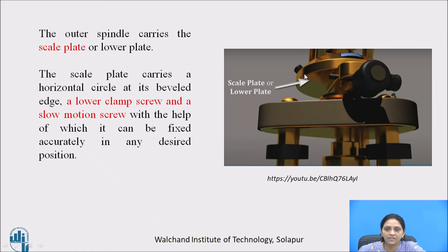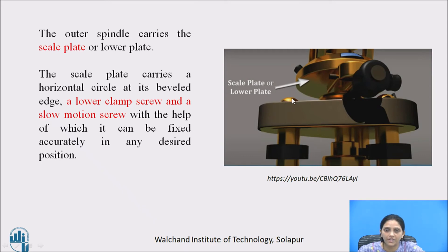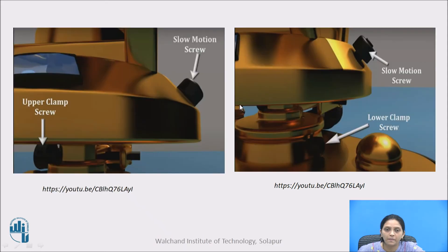The scale plate is also called the lower plate. The outer axis carries the scale plate or lower plate. The scale plate carries a horizontal circle at its bevel edge, a lower clamp screw, and a slow motion screw, with the help of which it can be fixed accurately in any desired position. The upper clamp screw and its slow motion screw form one pair, and the lower clamp screw and its slow motion screw form another pair.